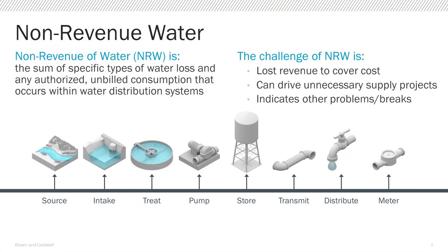It's important to start with the understanding that non-revenue water is water that a utility is paying to treat and pump throughout their storage and distribution system, but that they're not getting paid for. Several components of non-revenue water represent water waste that can lead to supply capacity improvement projects being needed earlier than necessary. High non-revenue water can be an indicator of a leaky system, and leaks often grow into pipe breaks.